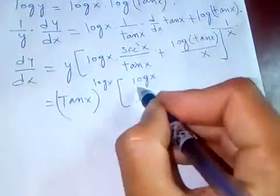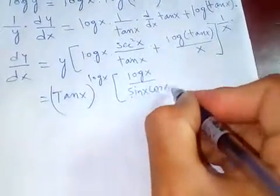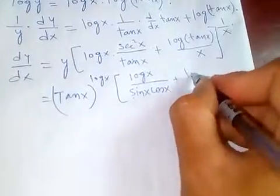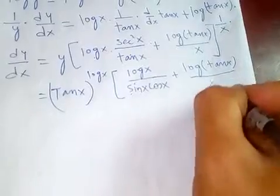Times log x, which is this one, and if you simplify this you will get sin x cos x plus log tan x over x.